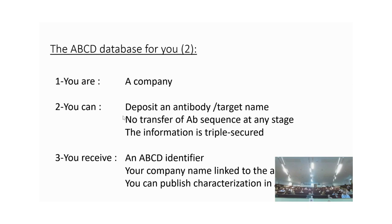If anybody else deposits the same sequence as you on another day, we can warn you that this antibody which was supposed to be unique has just been proposed by somebody else. The information is triple secure: you generate a code and never give the antibody sequence, the code is sent to us but we don't reveal it, and we have a system that makes the coding evolve so that people cannot reuse the program to generate more codes — the coding program is changing all the time.